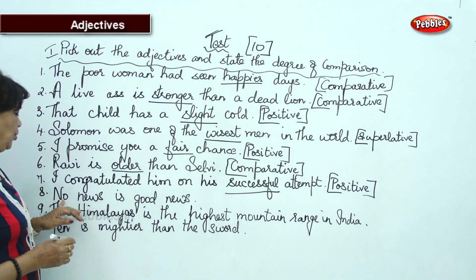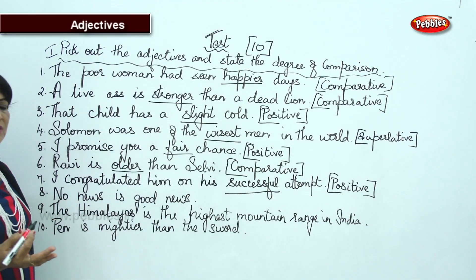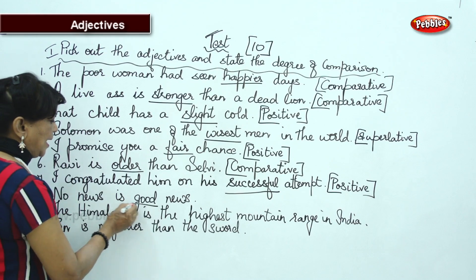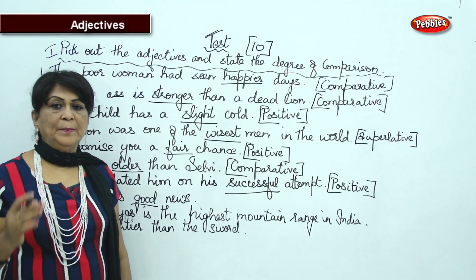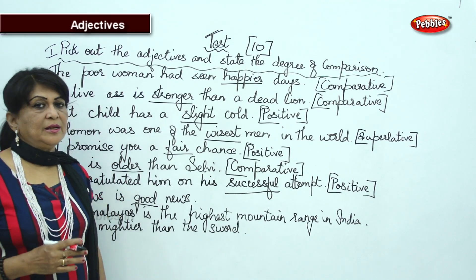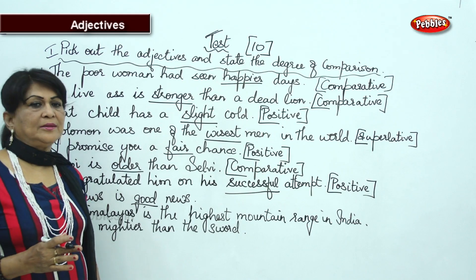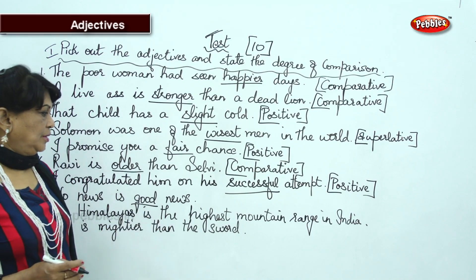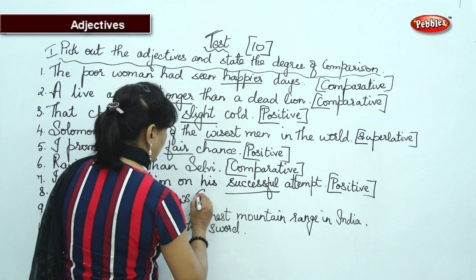'No news is good news.' Good is the adjective. Good, better, best — it comes under the irregular comparison. Good is a positive degree.